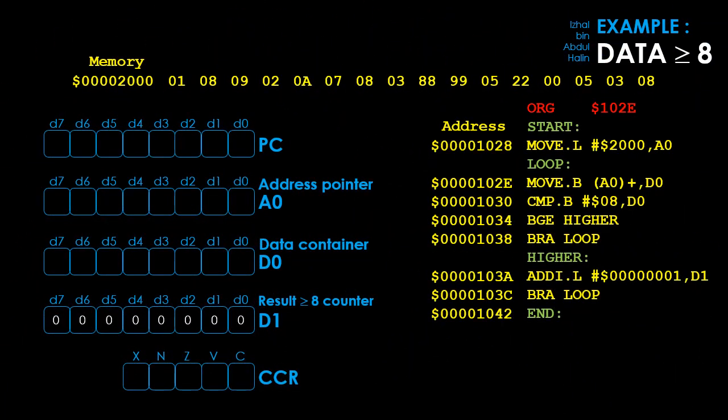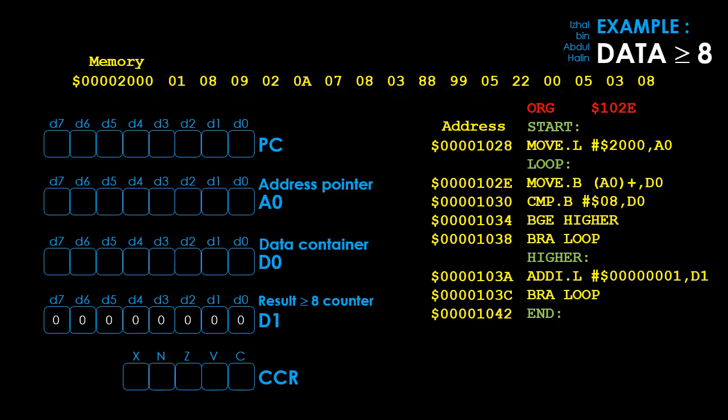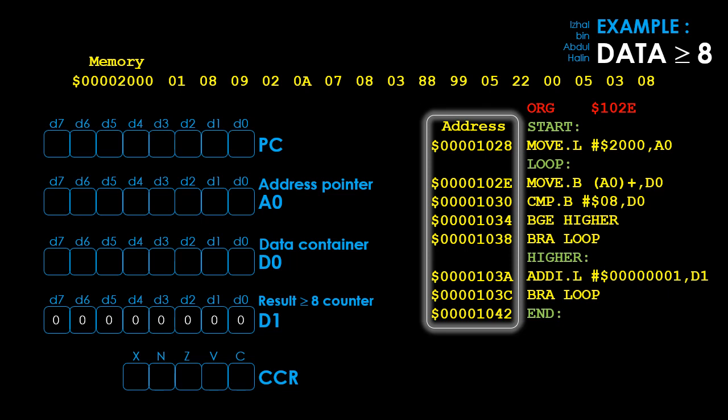Let's look at how the program is executed. At the top we have memory showing 16 bytes of data starting at address 2000. Our program will start scanning from here. We have label start pointing to address 1028, which is the address of the first instruction. Label loop is attached to the MOVB (A0)+, D0 instruction at address 102E. We have one more label, higher, pointing to address 103A that holds the add instruction.